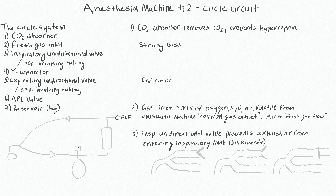The circle system allows us to introduce way less volatile anesthetic than if we were just wasting all the air that came in. These volatile anesthetics are expensive and need to be disposed of properly so they don't contaminate the operating room — and they're not good for the environment. So the less we can waste of the volatile anesthetics by sending them round and round through the circle, the better.